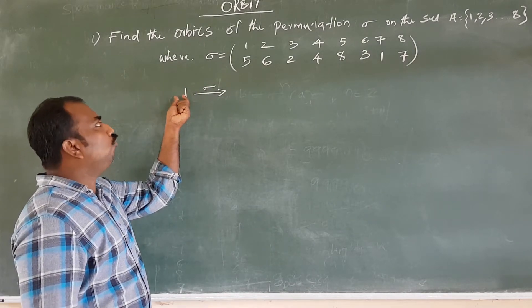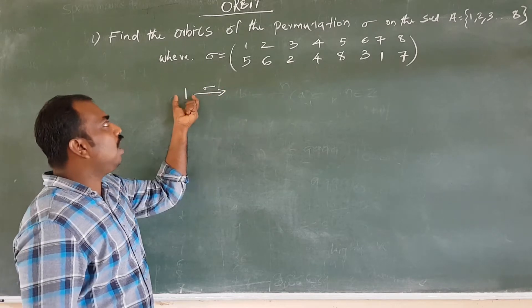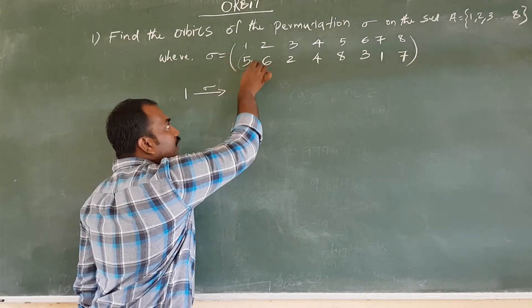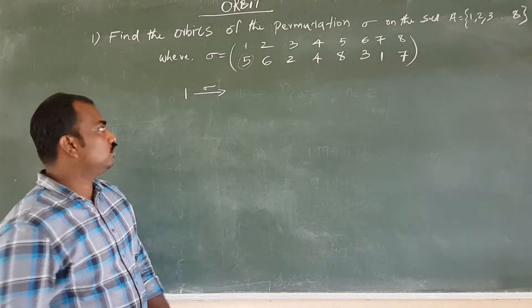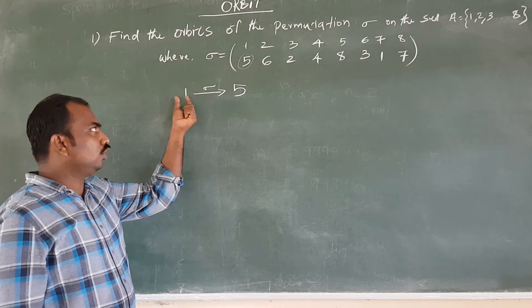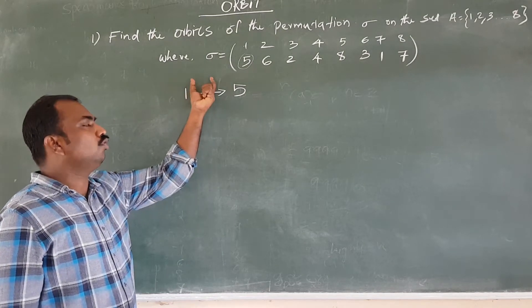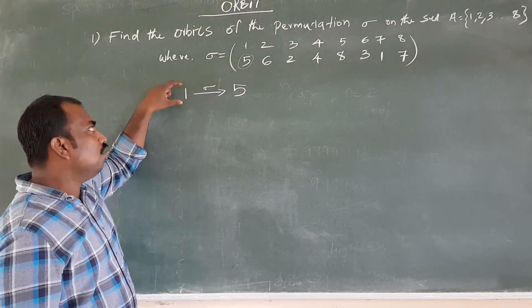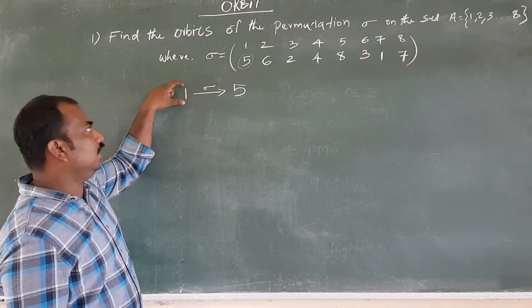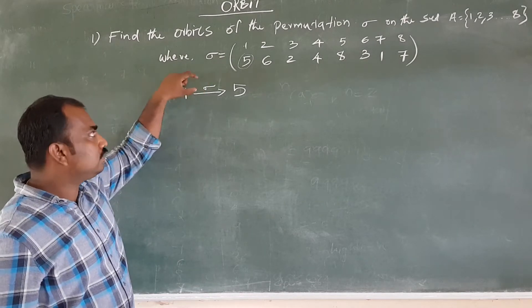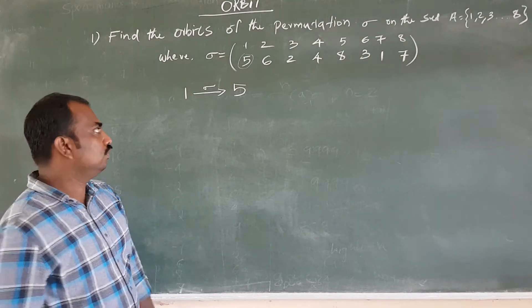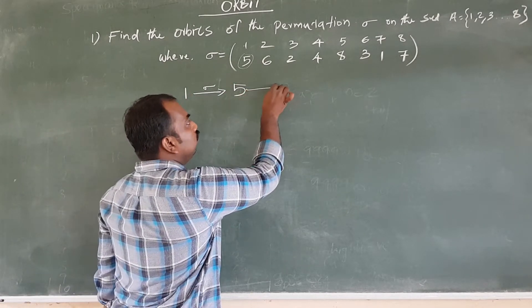Sigma of one — the image of one under sigma. When we start with one, the image of one under sigma is five.